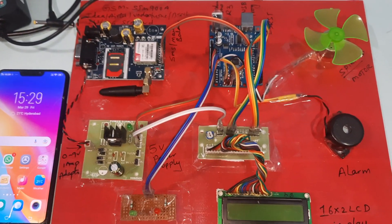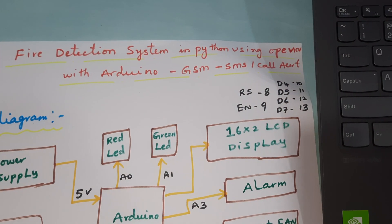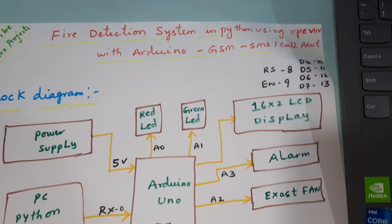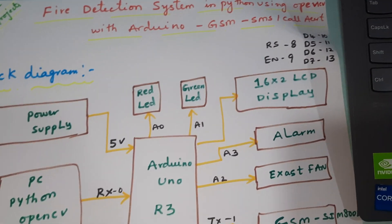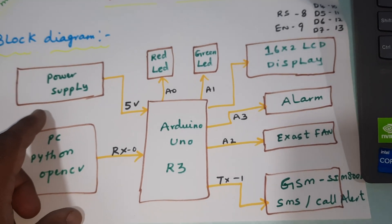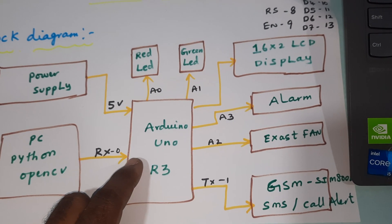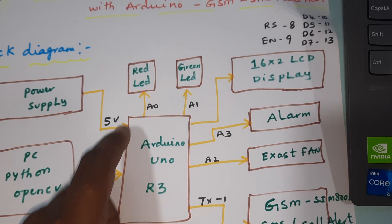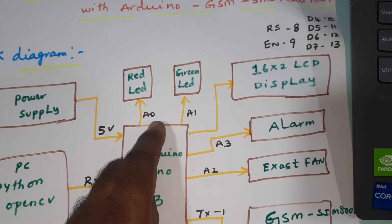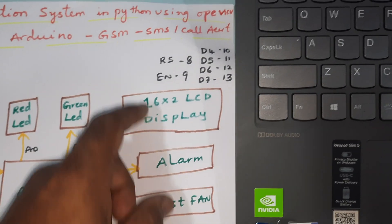The project title is Fire Detection System using OpenCV Python with Arduino and SMS alert and call alert. In this project we are using a 0 to 9 volts adapter power source, Arduino Uno R3, one red LED and one green LED. Those are connected with a 16x2 LCD display.